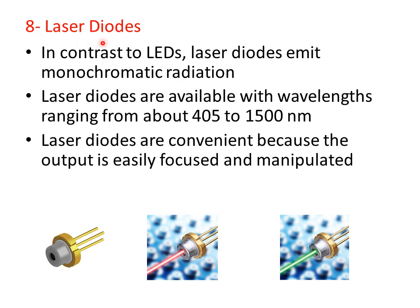The last light source is laser diodes. In contrast to LEDs, laser diodes emit monochromatic radiation — that is, radiation of a single wavelength. Laser diodes are available with wavelengths ranging from about 405 to 1500 nanometers. They are convenient because their output is easily focused and manipulated, producing monochromatic light at various wavelengths.